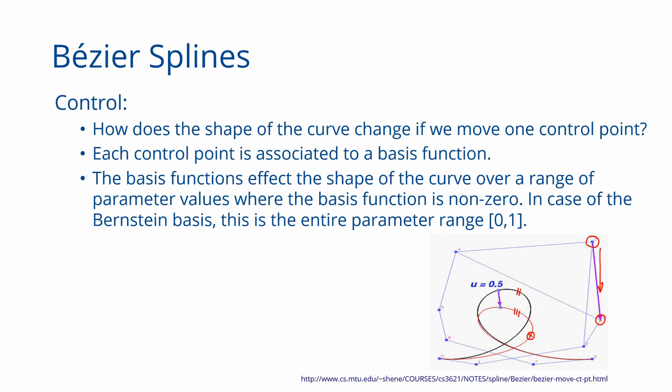This property is called the property of non-local control. This basically means that you cannot just move a control point and adjust a small part of the Bezier curve. If you move any control point, you will end up moving the entire Bezier curve.